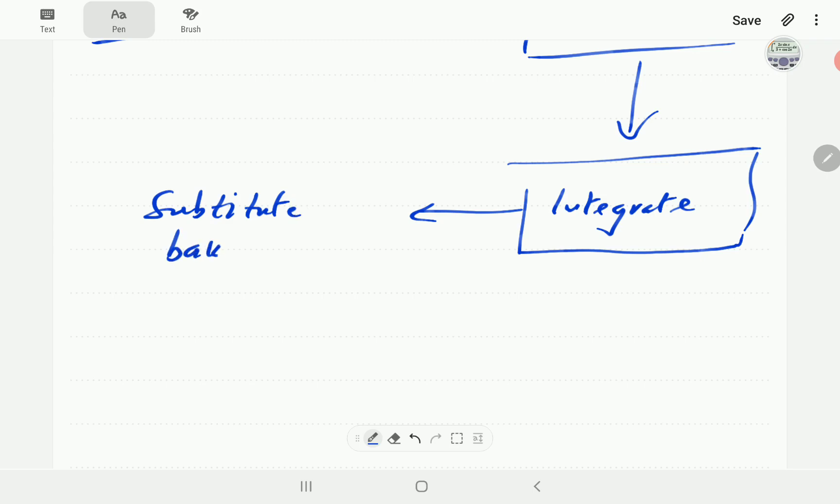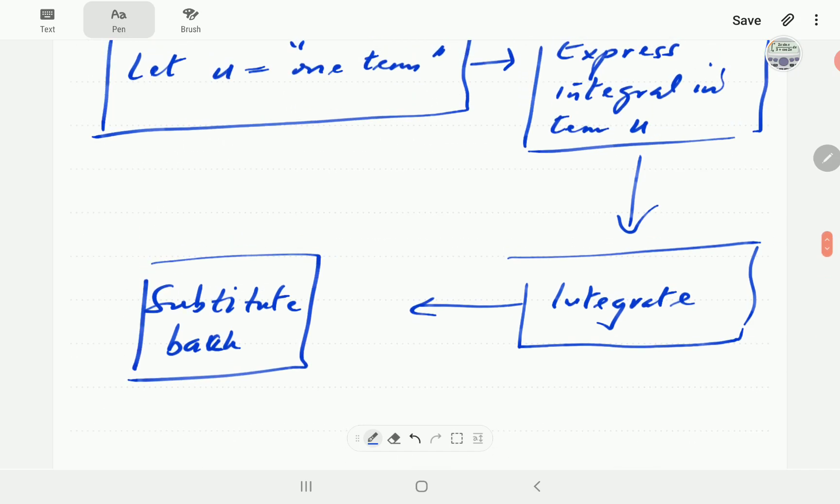Then we substitute back and write things in terms of x, if the original integral was in terms of x. So, then we substitute back. That is the four steps that are involved in evaluating integrals using the method of u-substitution.